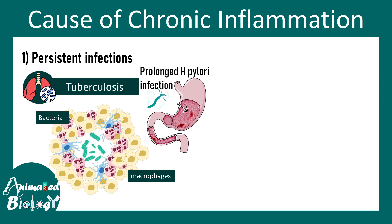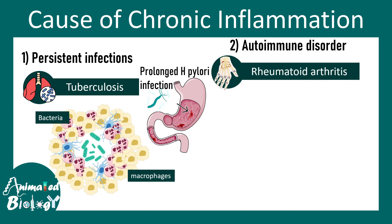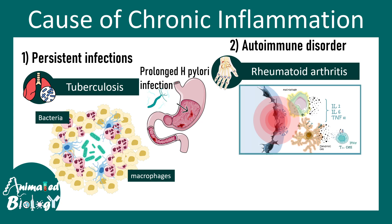There could also be prolonged H. pylori infection, which might lead to cancer. There could be autoimmune disorders such as rheumatoid arthritis — a person living with rheumatoid arthritis has inflammation over a long time period, for example years of inflammation, and that has long-term consequences in terms of health.